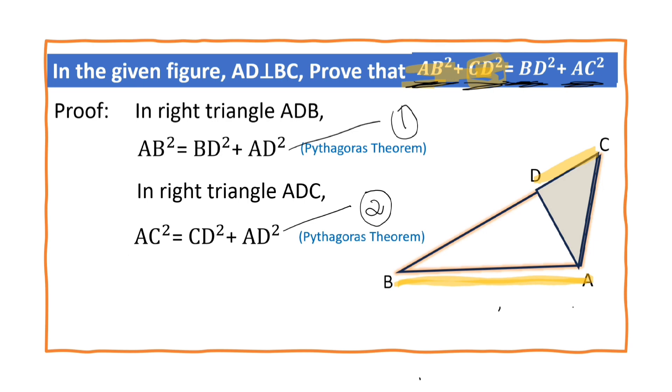So, now equation number 1 minus equation number 2. What is it? AB². The sign changes everywhere. Minus AC² is equal to BD² minus.